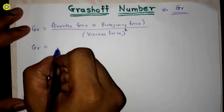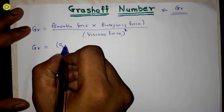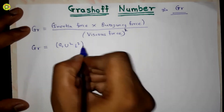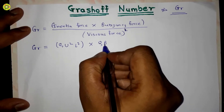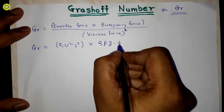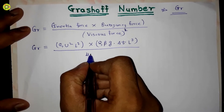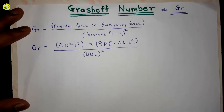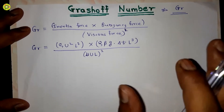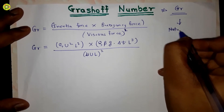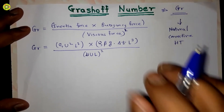Now we will write down the formula. The inertia force is given by ρu²L², and the buoyancy force is given by ρβgΔTL³. The viscous force is given by μuL, and it appears squared in the denominator. Note that the Grashof number is related only to natural convective heat transfer.